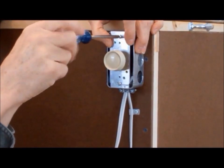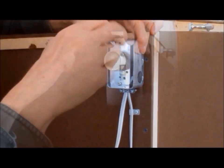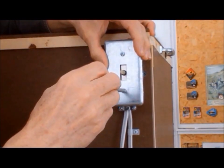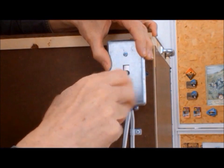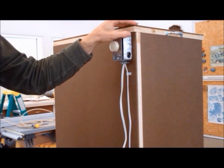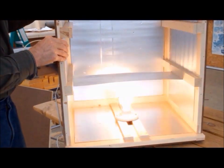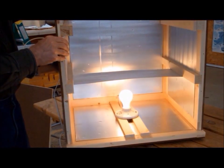Mount the dimmer switch to the box. Install a cover plate. Check to make sure everything works. And you're done.